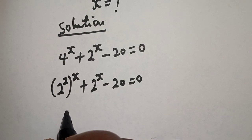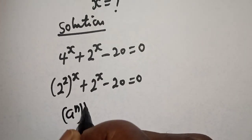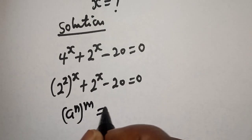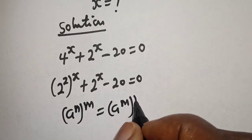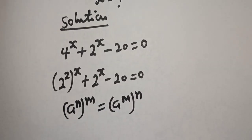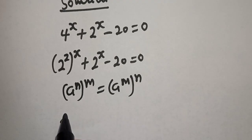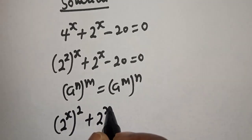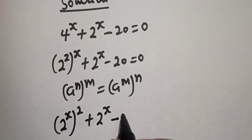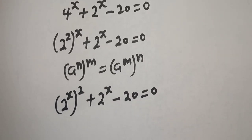Take note that a raised to power n, to the power of m, is equal to a raised to power m to the power of n. Then this can be written as 2 raised to power s, squared, plus 2 raised to power s, minus 20 is equal to 0.